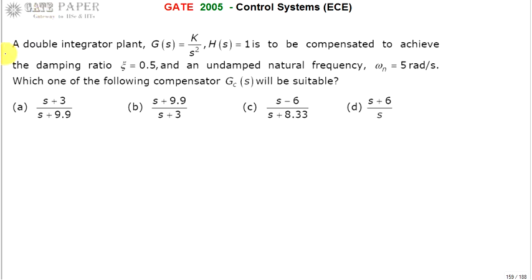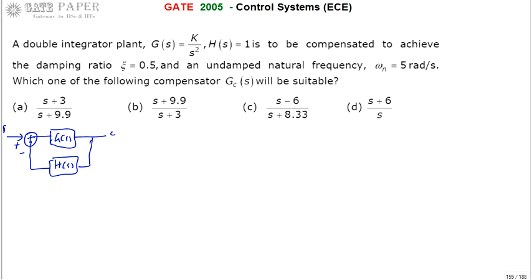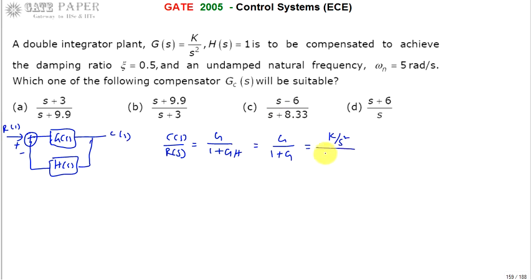G(s) and H(s) are given. The closed-loop transfer function C(s)/R(s) equals G divided by 1 + GH. Since H(s) = 1, this is a unity feedback system, so it becomes G/(1+G). With G = K/s², this gives K/s² divided by (1 + K/s²), which simplifies to K divided by (s² + K).